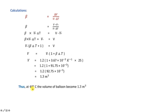Substituting values: V = 1.2 × (1 + 3.67 × 10⁻³ × 25). Multiplying and simplifying gives a final volume of approximately 1.3 m³ for the balloon.